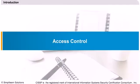Hello and welcome back to Lesson 2 of the CISSP Certification Course by Simply Learn. This lesson is about Access Control. Access Control is the second of the ten domains of the Common Body of Knowledge (CBK) for the CISSP Certification Exam.